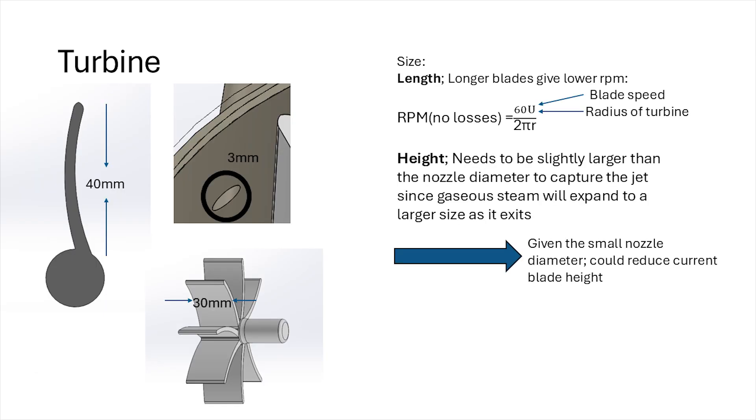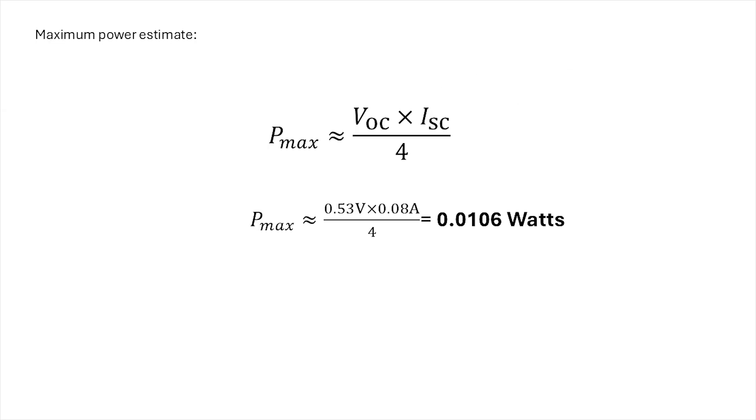Size-wise, a longer blade is better for lower-RPM applications, whereas a smaller blade will make it spin faster. Although I could get a higher voltage by driving the motor shaft faster, the wobble and unbalanced rotor means I don't plan on increasing the speed. For the height, it needs to be tall enough to capture the jet of steam coming out of the nozzle, meaning it needs to be a little bit larger than the nozzle diameter, since gas will expand as it shoots out. Since my nozzle has a small diameter of 3mm, I think I could reduce my blade height.